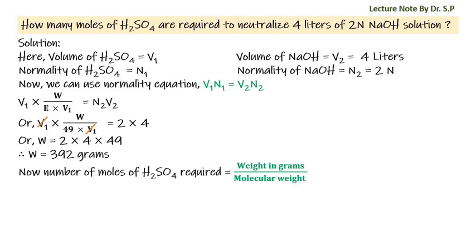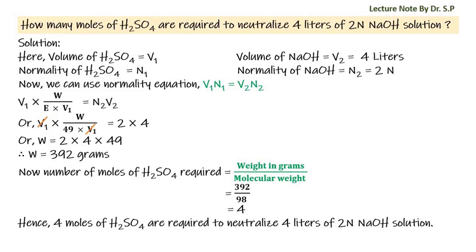Now, the number of moles of sulfuric acid required to neutralize 4 liters of 2N NaOH solution equals weight in grams of sulfuric acid divided by molecular weight of sulfuric acid, that is 392 / 98 = 4. Hence, 4 moles of sulfuric acid are required to neutralize 4 liters of 2N sodium hydroxide solution.